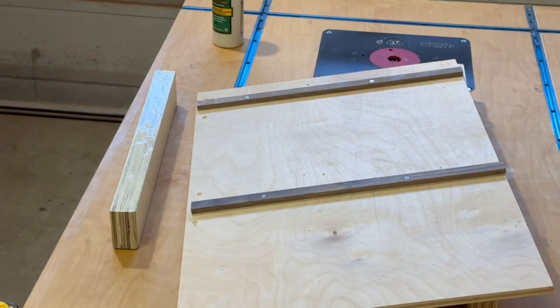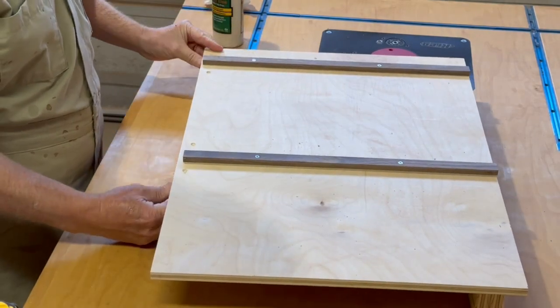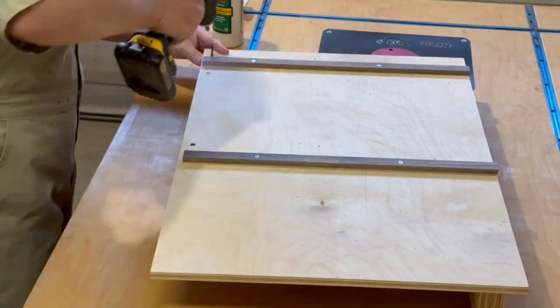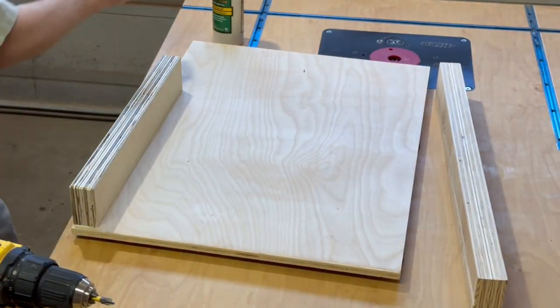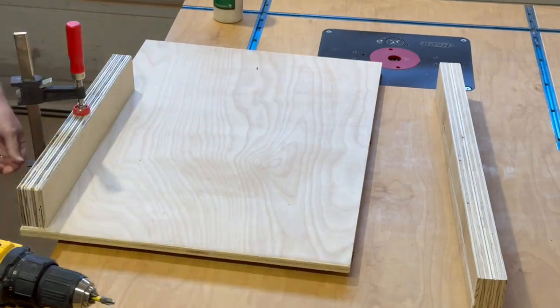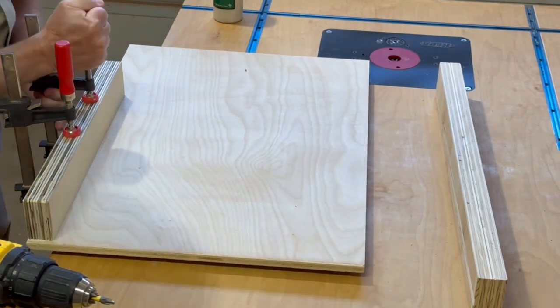The next step is to attach the back fence to the sled base with some glue, some screws, and some clamps. Just lining it up with the edge of the base is good enough. It doesn't really have to be precisely square, and I'm being careful not to put any screws in the path of the saw blade.